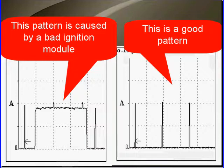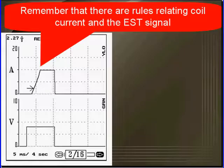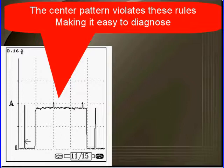This pattern is caused by a bad ignition module on the left. The pattern on the right is a good pattern. Remember that there are rules relating the coil current and EST signals. The center pattern violates these rules making it easy to diagnose.